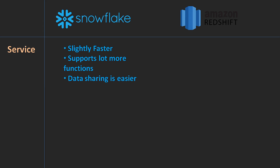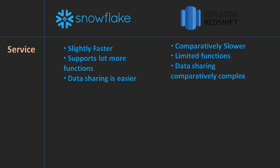Compared to Amazon Redshift, sharing terabytes of data is really easy in Snowflake. Amazon Redshift is comparatively slower, has a limited number of functions, and data sharing can be slightly complicated.